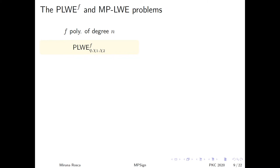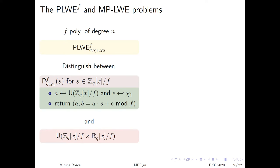Now I want to recall the definitions of PLWE and MPLWE. PLWE is defined using a polynomial f of degree n and is based on a specific distribution. For a fixed secret s in Z_q[x] modulo f, this distribution outputs pairs of polynomials a, b, where a is uniformly random in Z_q[x] modulo f, and b is a times s plus e modulo f, where e is drawn from a chi distribution. The polynomial learning with errors problem asks you to distinguish between the above distribution and the uniform one with non-negligible probability over the choice of the secret s.